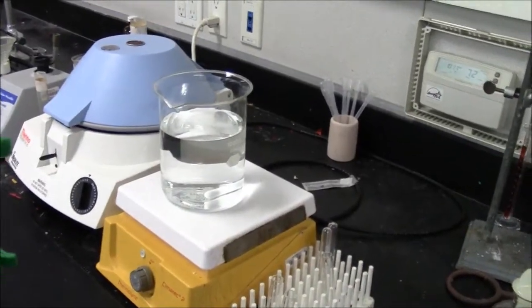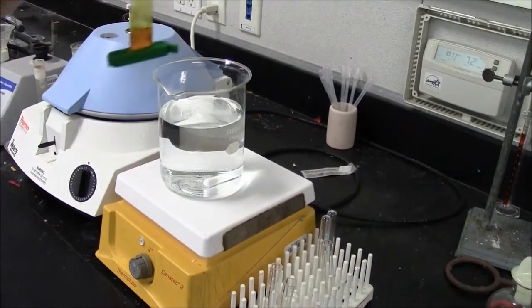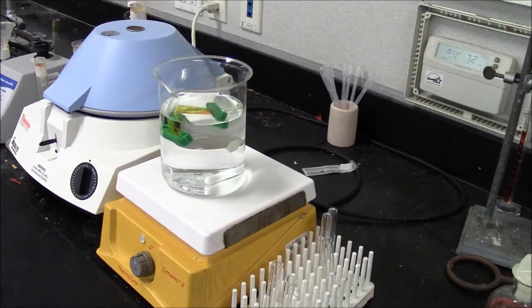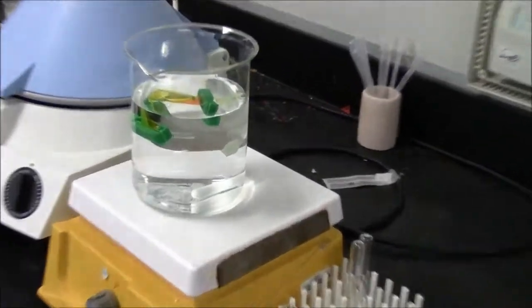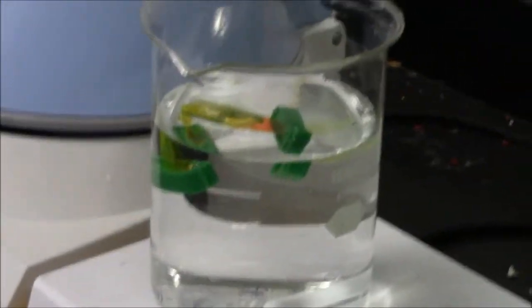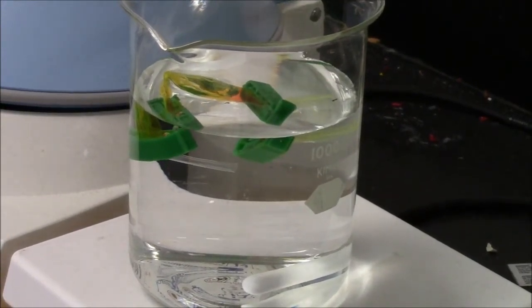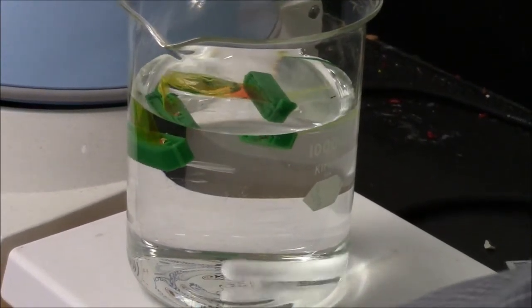Here I have a beaker, a one liter beaker with distilled water. And what I want is for my dialysis bag to be floating. I have a magic bean on the bottom, a magnetic stirrer. And I want to be able to stir without colliding with anything.